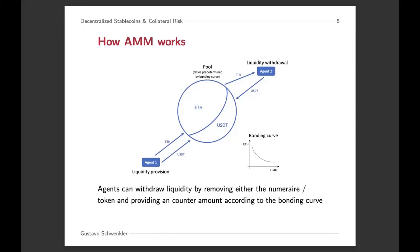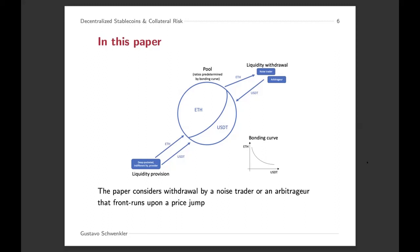To study this framework, the paper makes some assumptions. There are two types of agents that carry out withdrawals in the market: a noise trader that trades purely due to idiosyncratic reasons, and an arbitrageur that steps in whenever it's profitable to trade. One important thing is that this arbitrageur essentially front runs — they trade faster than anybody else whenever there's a profitable investment opportunity. On the other hand, liquidity provision is done by an agent that is deep pocketed, with an infinite supply of assets, and is also indifferent between providing liquidity in the pool or really not doing anything else.